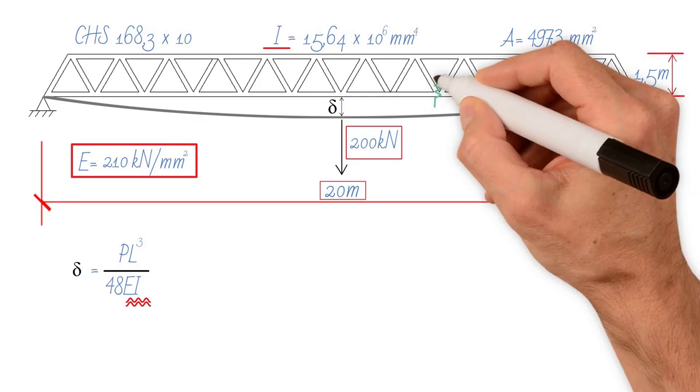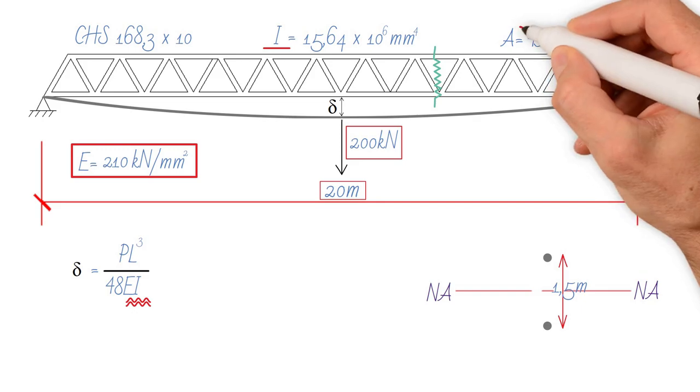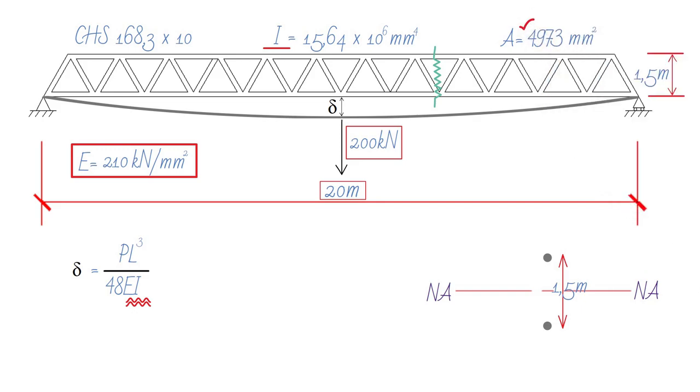If we take a cut through the truss, we have this situation. We know that the area of each section is 4973 millimeters squared, and I local, which is equal to 15.64 times 10 to the 6 millimeters to the 4.